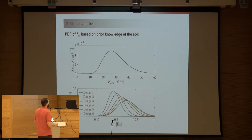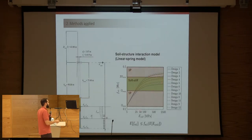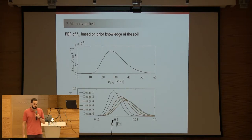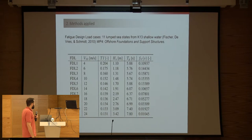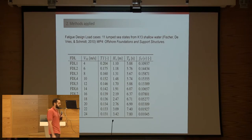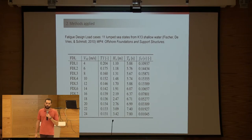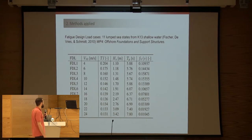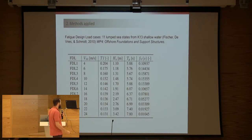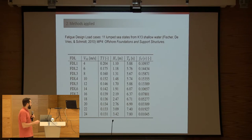These are the two excitation regions and this is our sign in this case. Assuming this is our prior distribution on soil stiffness, and based on this relation, we also have a prior estimation of the first natural frequency.